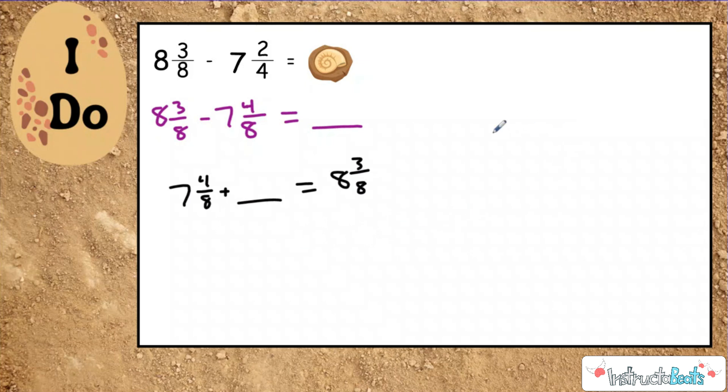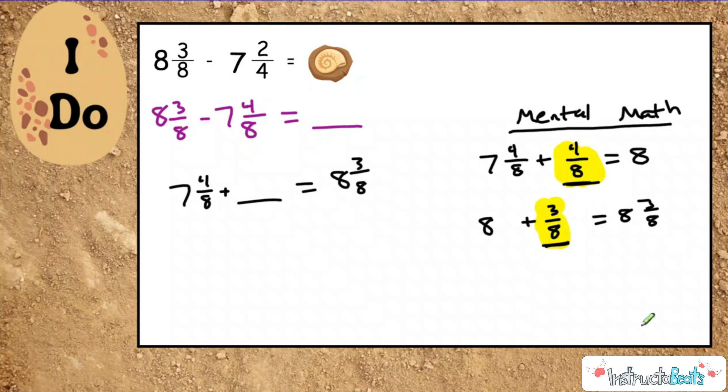So I know, and this is kind of mental math that you could do in your head over here, but because it's the I do problem, we will write it down. If I start at seven and four-eighths, I need to add four-eighths to get to my next whole number, which is eight. Then from eight, if this was a number line, I need to add three-eighths to get to eight and three-eighths. So if I add up the two parts that I had to count up with, I see that the difference between seven and four-eighths and eight and three-eighths would be seven-eighths.